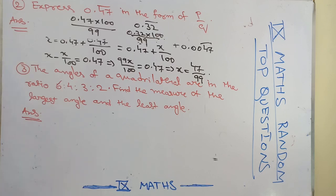The angles in a quadrilateral are in the ratio 6 is to 4 is to 3 is to 2. Find the measure of the largest angle and the least angle. The largest angle will make the largest part of the ratio.